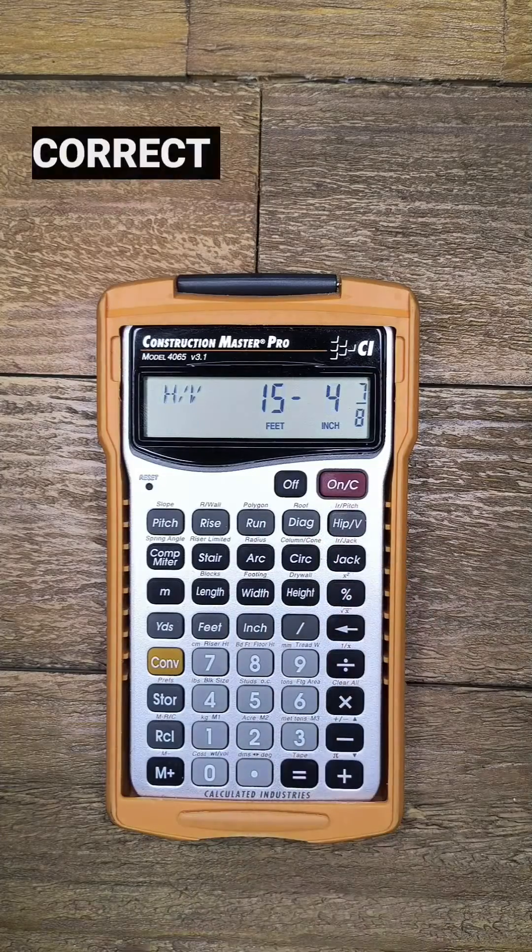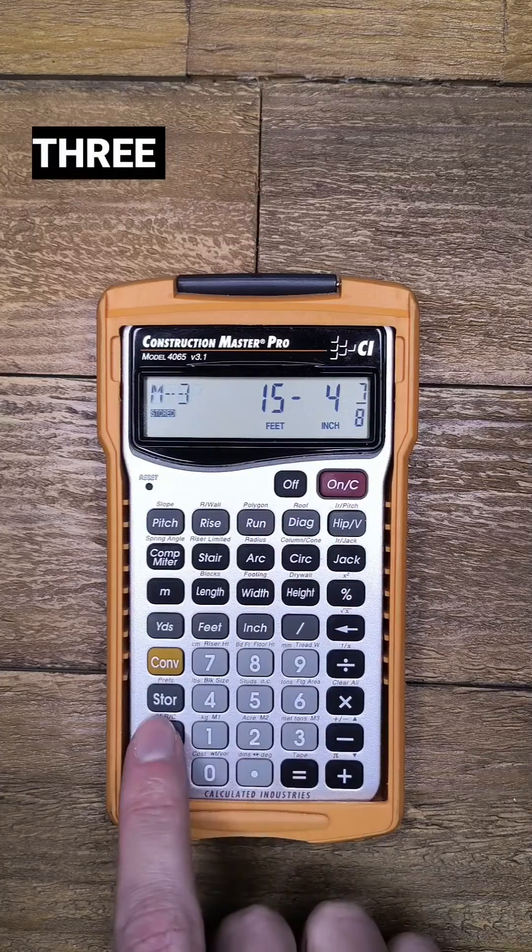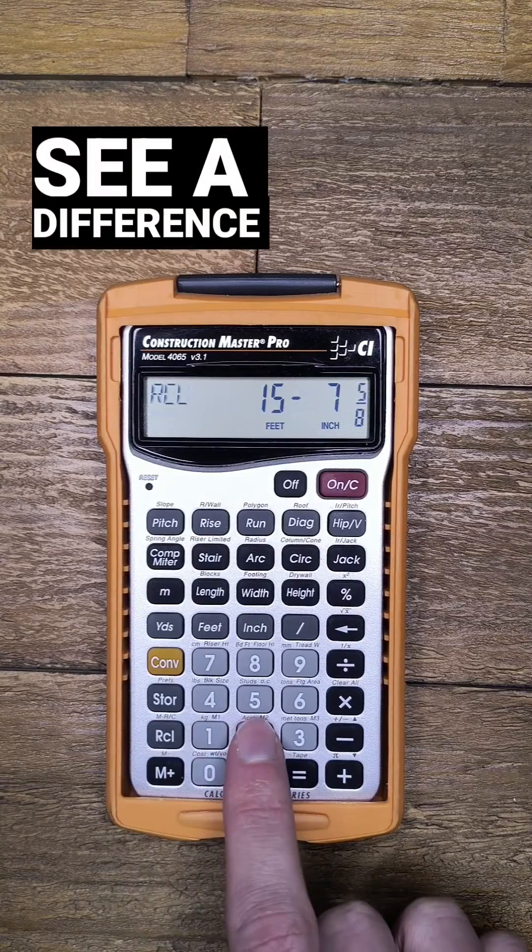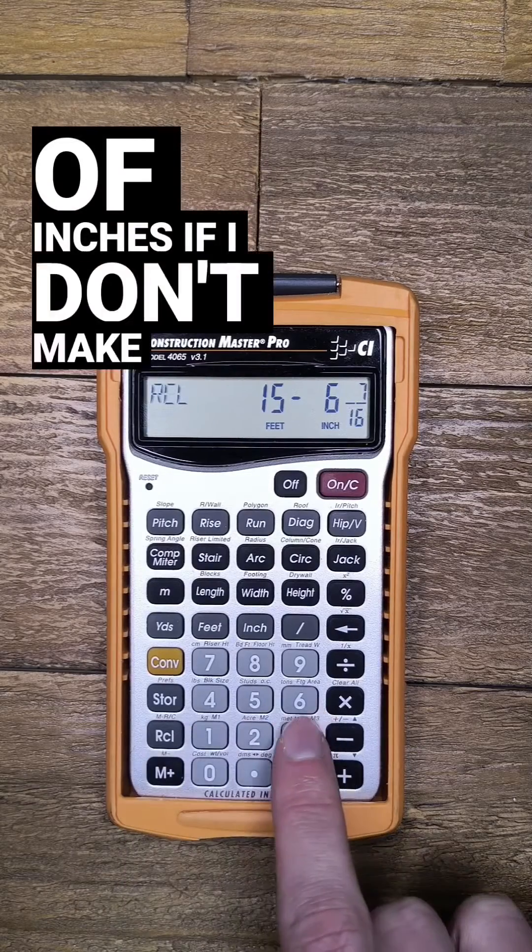Now pushing hip V will give me the correct length. I'll store that in memory 3, and I can toggle through the three solutions and see a difference of a couple of inches if I don't make the right deductions.